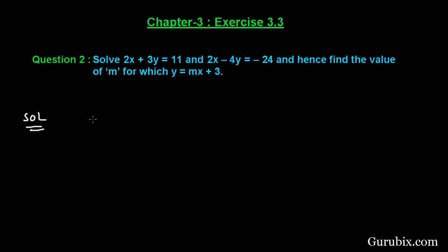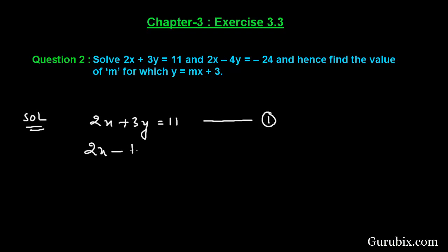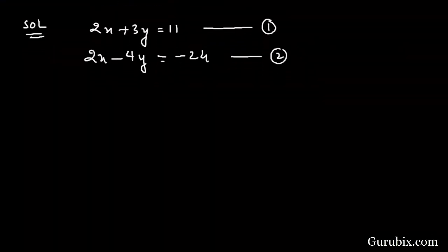We are given two pairs of linear equations: 2x plus 3y equals to 11 — let this be equation number 1 — and 2x minus 4y equals to minus 24 — let this be equation number 2. We shall use the substitution method to solve this pair of linear equations.